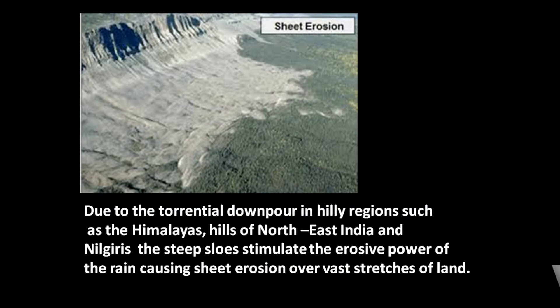There are different types of soil erosion. The first is sheet erosion. As you can see in the picture, when there is torrential downpour in hilly regions such as the Himalayas, hills of northeast India, and the Nilgiris, the steep slopes stimulate the erosive power of rain causing sheet erosion over vast stretches of land, removing the vegetation cover and topsoil.